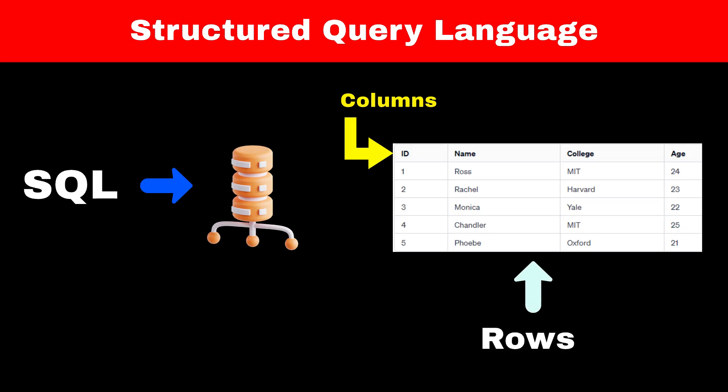For example, the student table can have columns such as id, name, college, and age. On the other hand, rows will have actual values for these attributes, meaning the first row can have an entry of a student with id equal to 1, name equal to Ross, college equal to MIT, and age equal to 24, and so on.